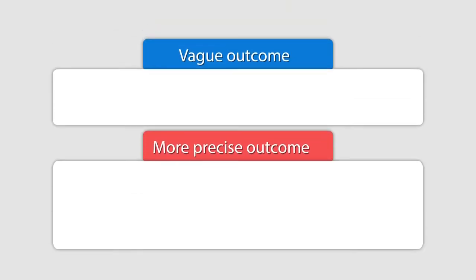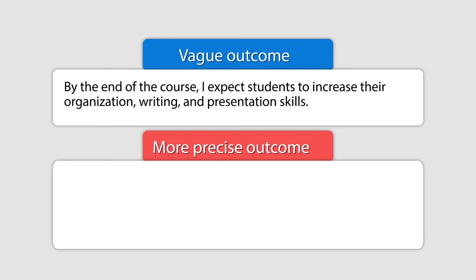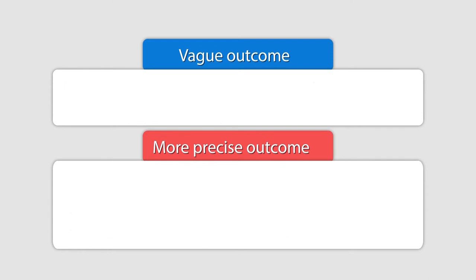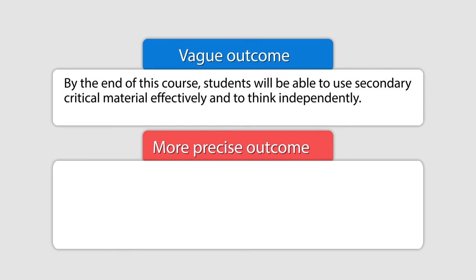Using specific language informs students of the standards by which they will be assessed and ensures that student and instructor goals in the course are aligned. For example, comparing a vague outcome versus a more precise outcome: vague — 'by the end of the course I expect students to increase their organization, writing, and presentation skills.' More precise — 'by the end of the course students will be able to produce professional quality writing, communicate the results of their research findings, and analyze to fellow classmates in an oral presentation.'